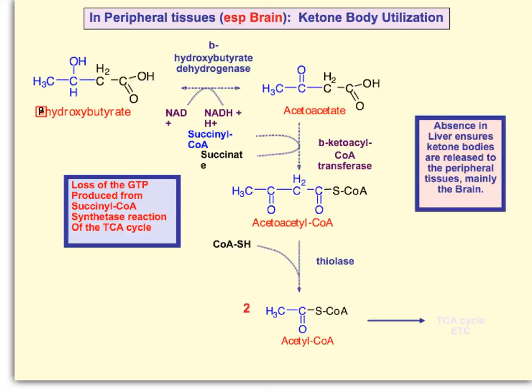So overall you gain a reducing equivalent, you lose a GTP, and you gain acetyl-CoA. In fact you gain two acetyl-CoAs: you get the acetyl-CoA already attached, and then by adding another coenzyme A, you get a second acetyl-CoA.